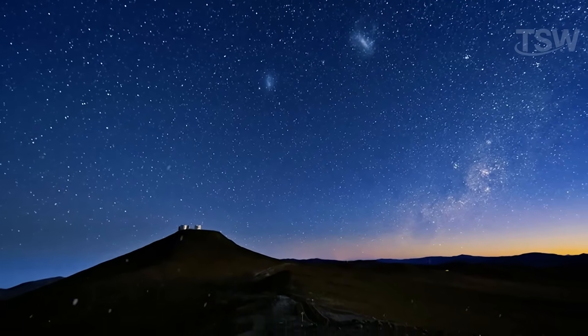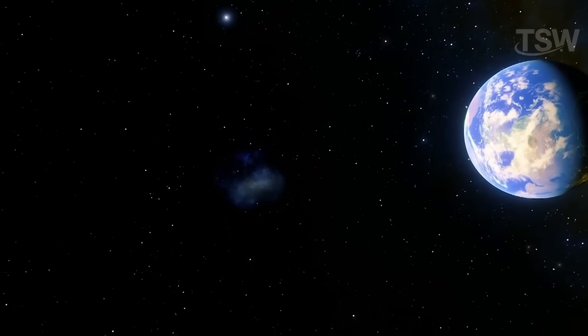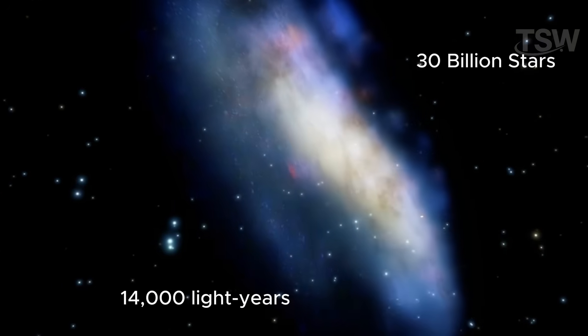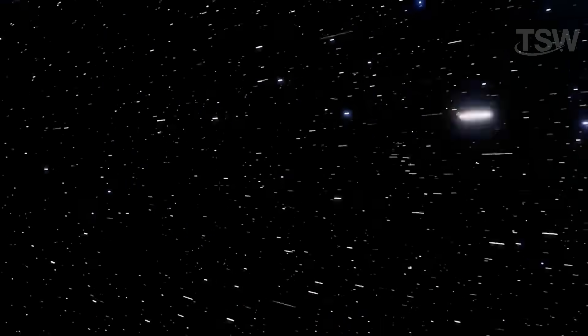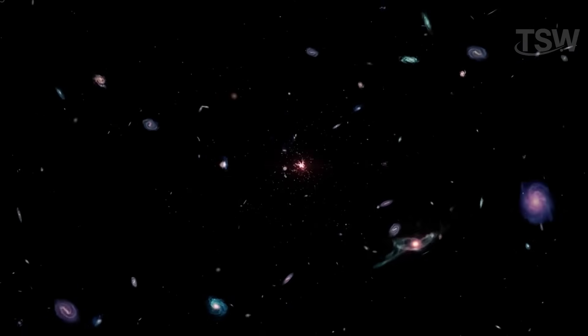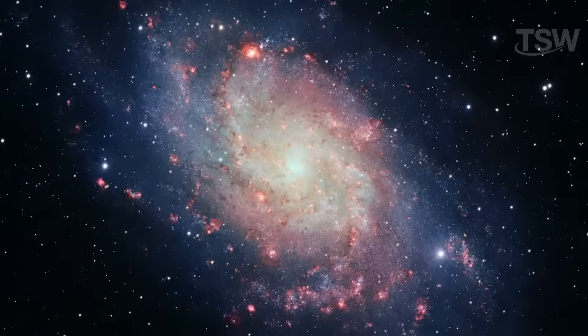The large Magellanic Cloud lies just 163,000 light-years from Earth, which, in cosmic terms, is basically next door. It has a diameter of about 14,000 light-years and hosts around 30 billion stars. Unsurprisingly, it's the fourth-largest galaxy in the so-called Local Group, behind only Andromeda, the Milky Way itself, and the Triangulum Galaxy.